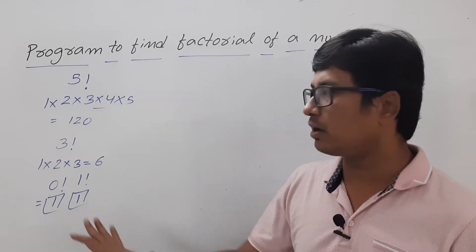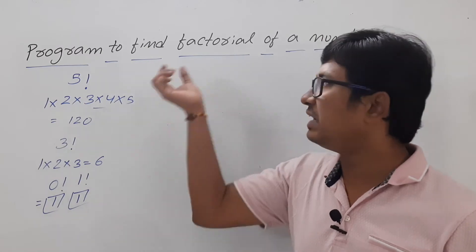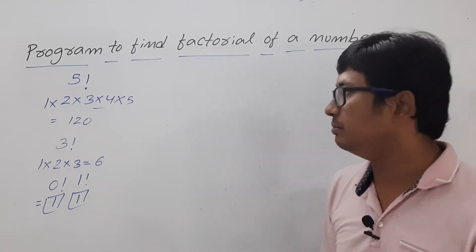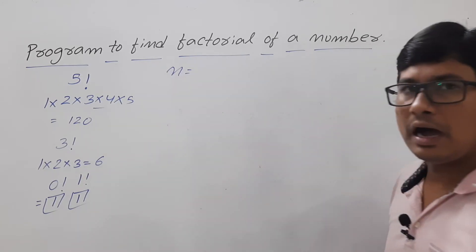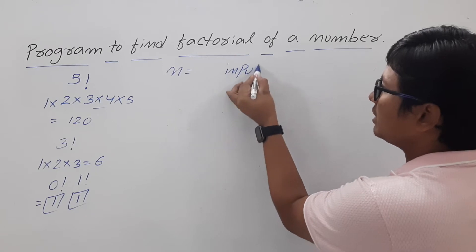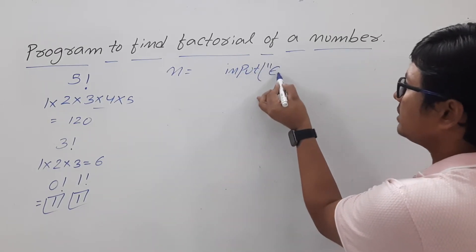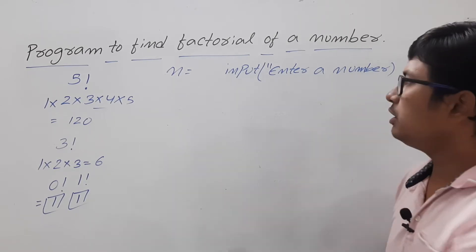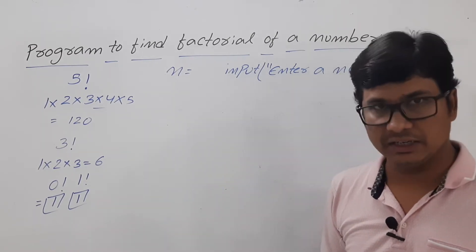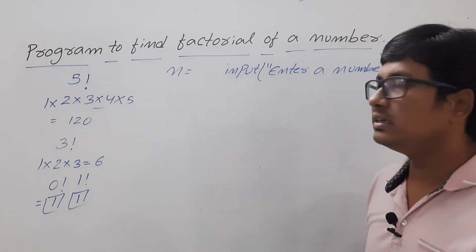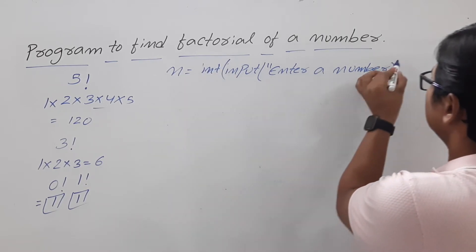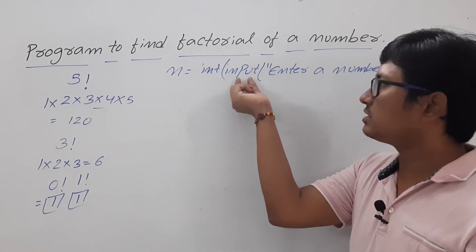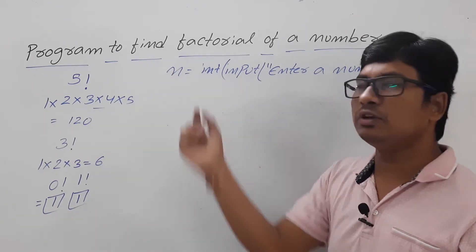Now with this background information, let me write a Python program to find the factorial of a number. First, I need to ask the user to enter a number. I will use the input function and prompt 'enter a number'. We know that the input function returns everything as a string, so I need to do typecasting to convert it to an integer.